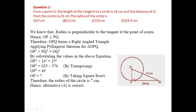We apply Pythagoras theorem: OP² + PQ² = OQ². Substituting: OP² + 24² = 25². So OP² = 625 − 576 = 49, therefore OP = √49 = 7. The radius of the circle is 7 centimeters.